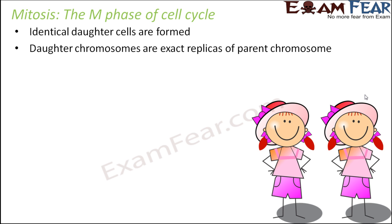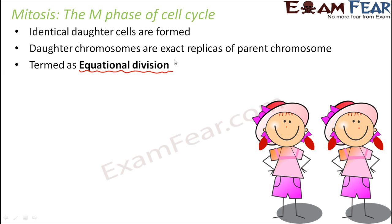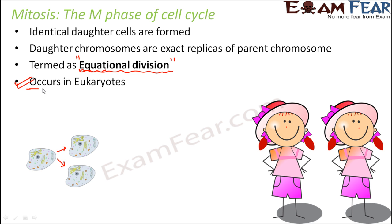Daughter chromosomes produced are exact replicas of parent chromosomes. Mitosis is also known as equational division. Why? Because the daughter cells produced are equal — they are exactly the same. So if you have a parent cell it gives rise to two identical daughter cells, meaning the parent cell divides things equally between both daughter cells so that both are exactly similar. This occurs in eukaryotes; it is not seen in prokaryotes because prokaryotes do not have nuclear membrane, nucleus, or nucleolus.